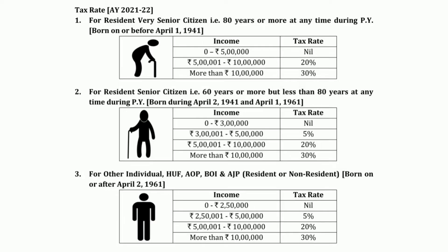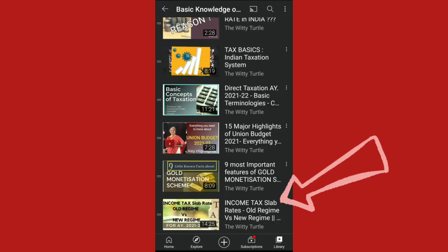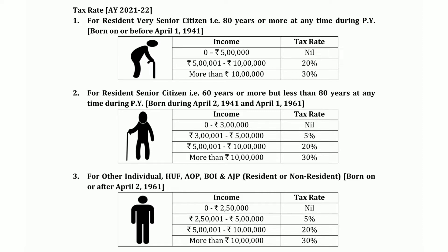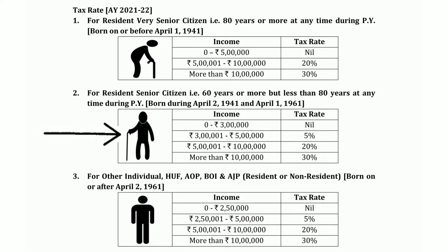We all know the income tax slab rate for individuals — if you have not seen that video, I will put the link in the description box. The exemption ceiling is rupees 2 lakhs 50 thousand, and for somebody who has attained the age of 60 years — yani ki jisko hum log senior citizen bolte hai — unke liye jo exempted ceiling hota hai, 3 lakh hota hai.